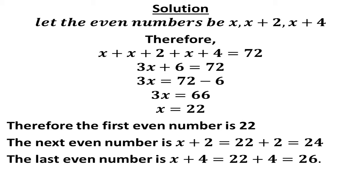So if that should be the case now, we are asked to sum all the even numbers together to get 72. So if you sum them together, you'll be having x plus x plus 2 plus x plus 4 equals to 72. As you can see on the screen right now.